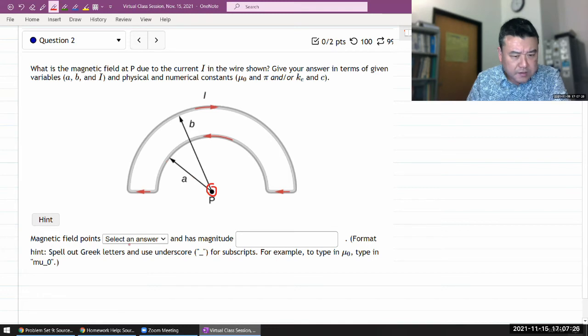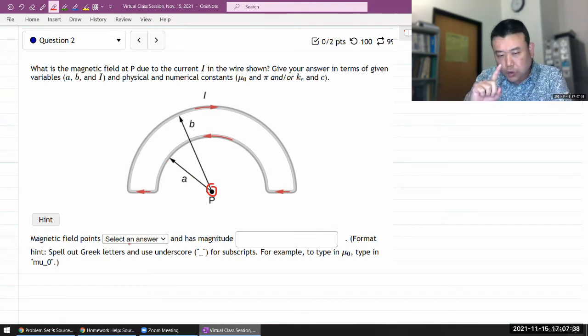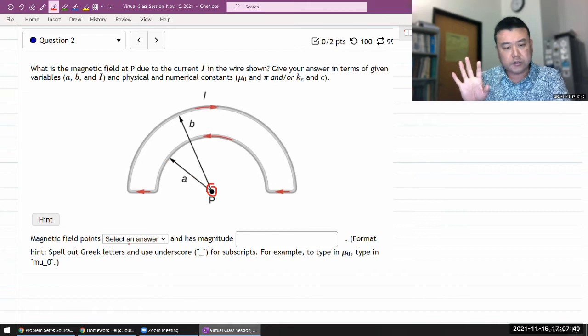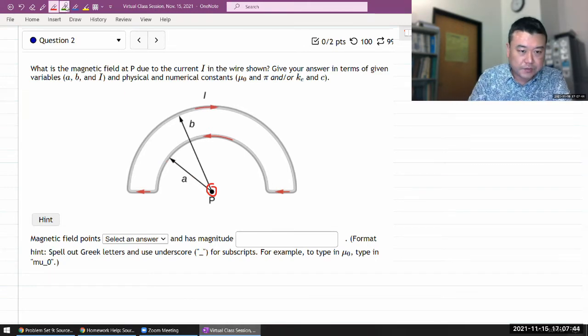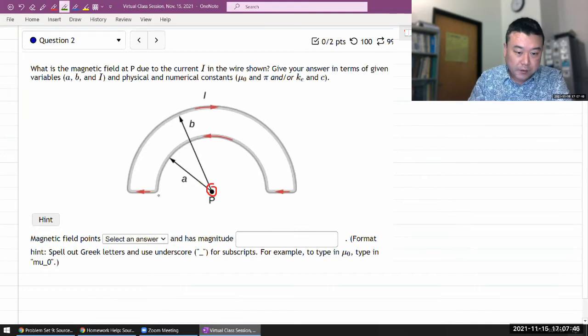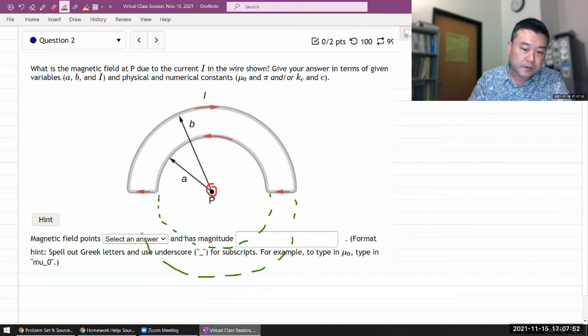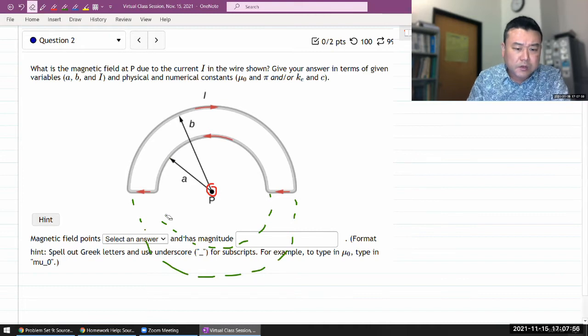I think the direction is the easier piece to answer. So this is good practice of right hand rule. There's a shortcut right hand rule you can use recognizing this is a half of a loop and this is another half of a loop. Let me do the version without any shortcuts here.